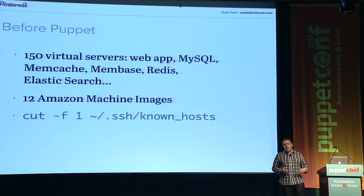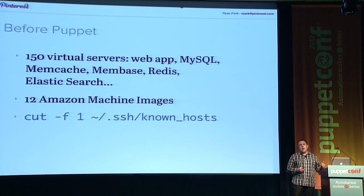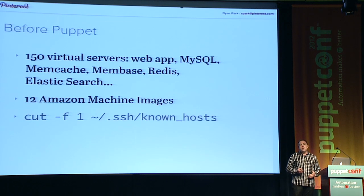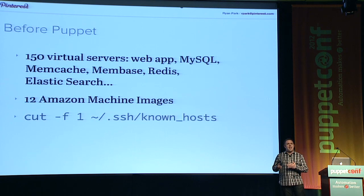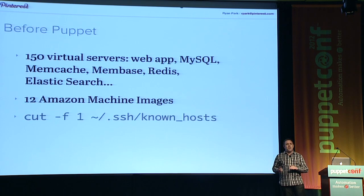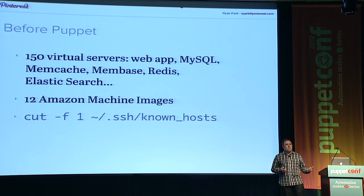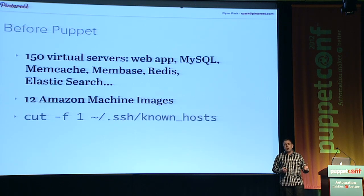Before Puppet, we would basically use Amazon machine images, or AMI snapshots, to configure machines. We'd build up what seemed like a perfectly good database server and make an image of it, then launch a copy of that image the next time we needed another database server. That worked okay, but there was no real way to validate that these database servers were correct, and once we had a bunch of servers up, there was no way to run code against them or make changes.